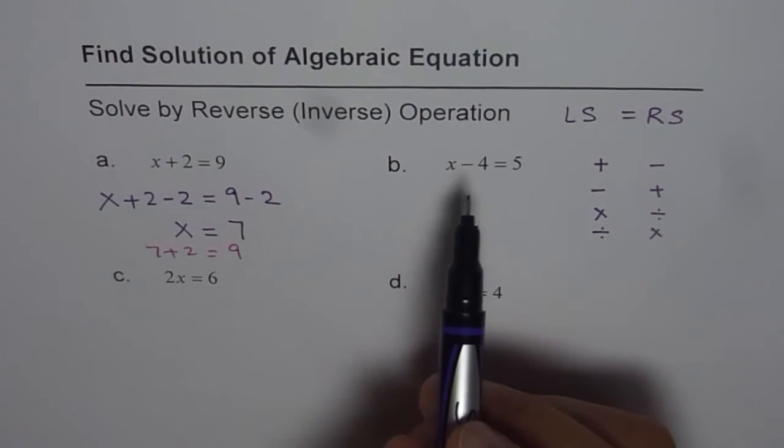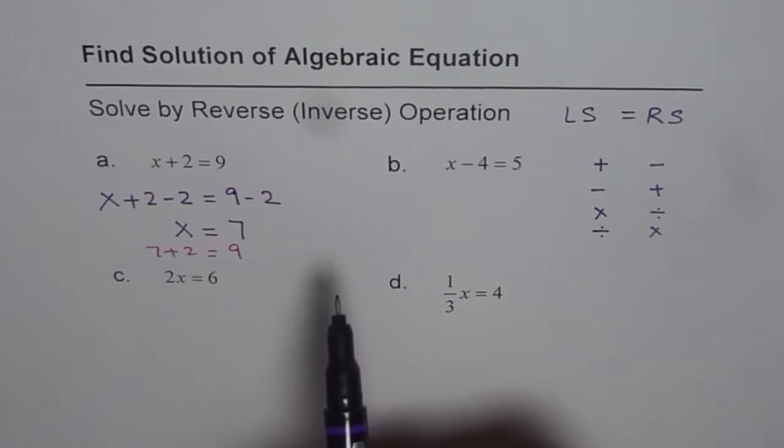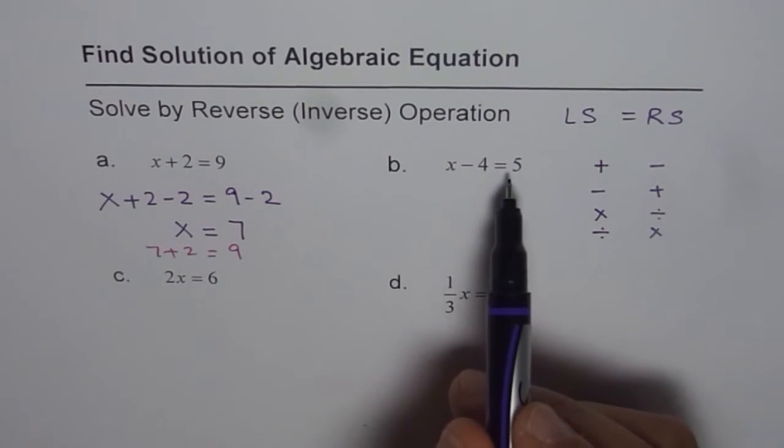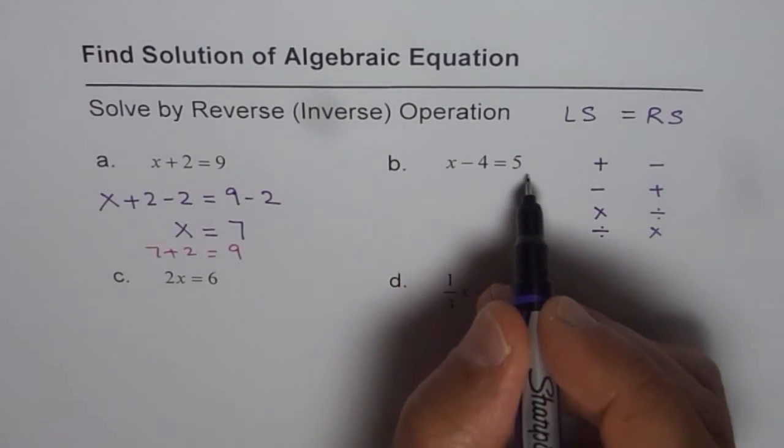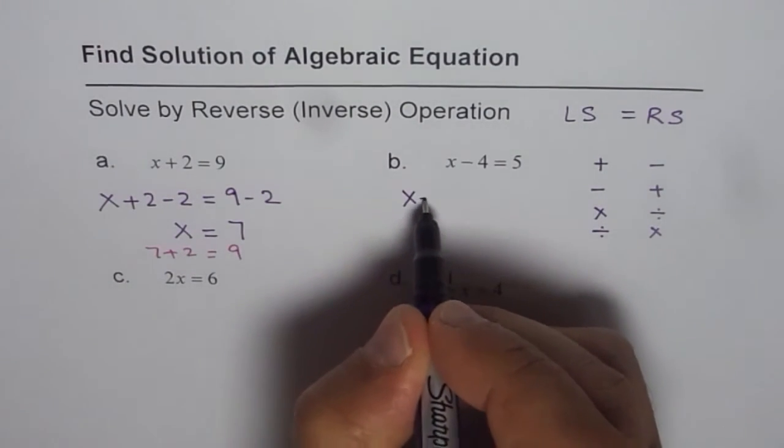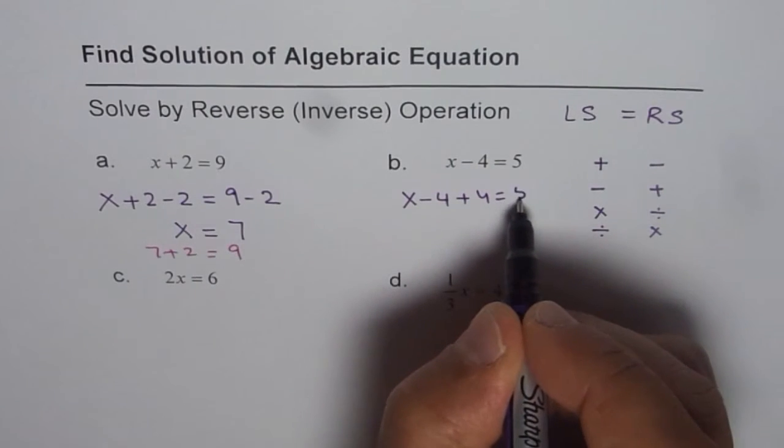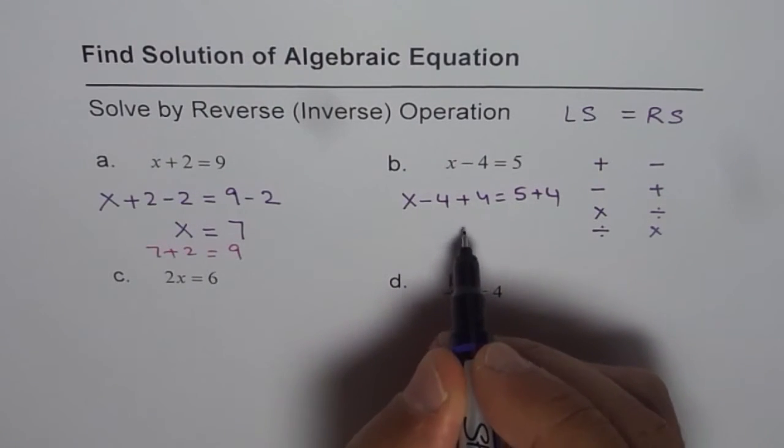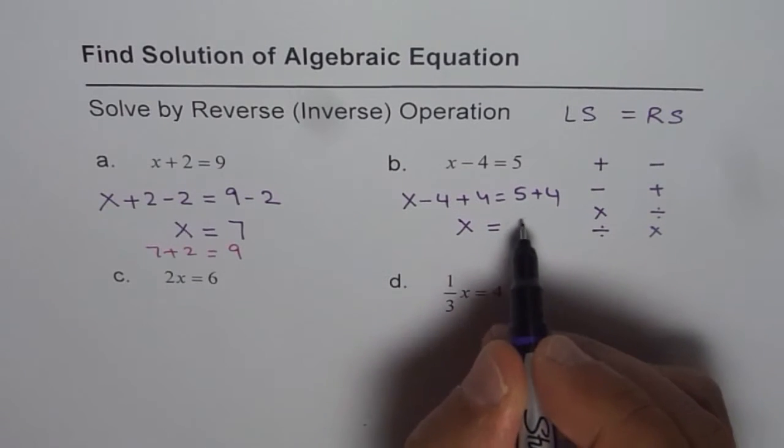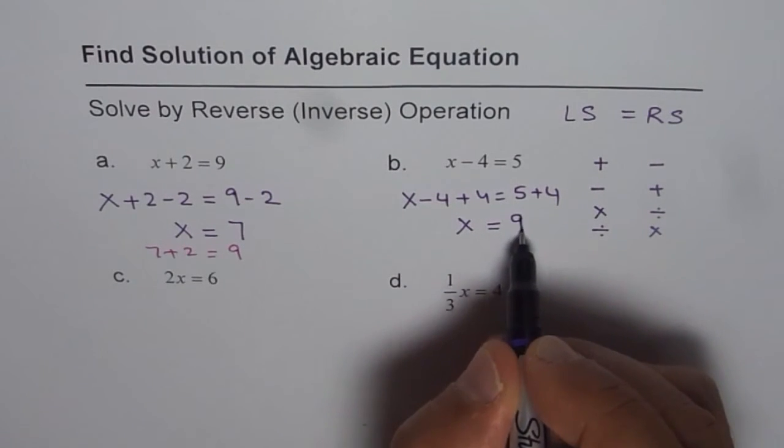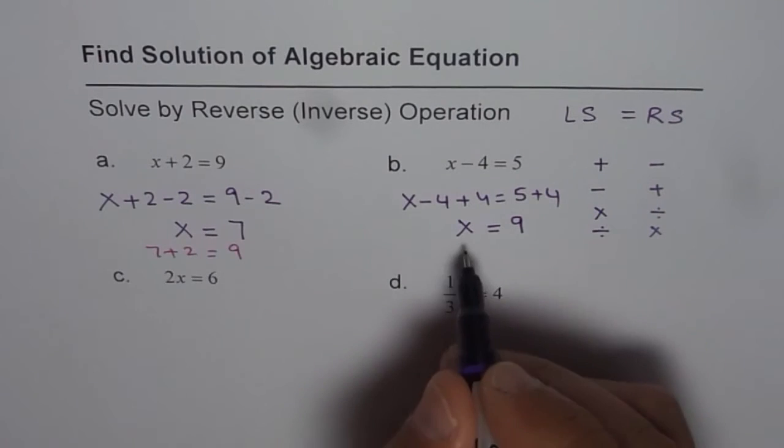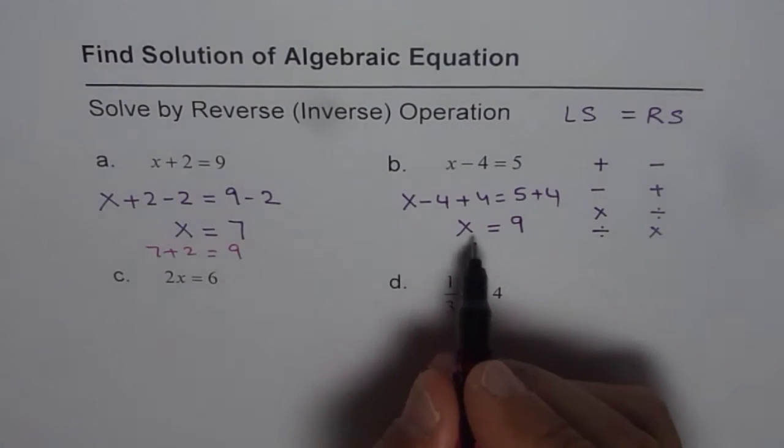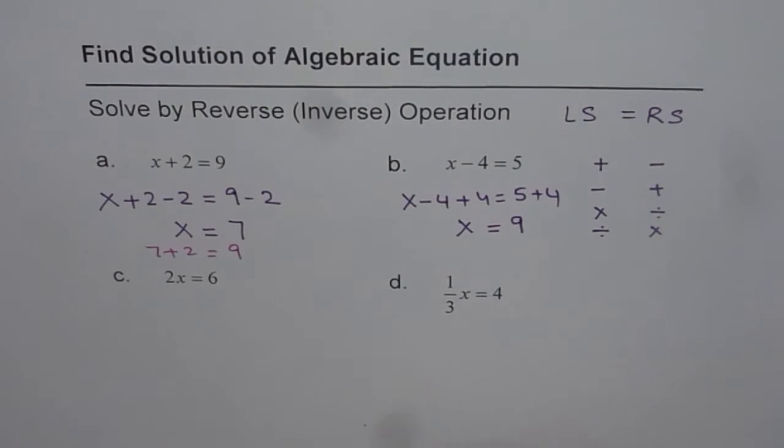Let's do one more. x minus 4 equals 5. What is reverse of minus 4? Plus 4. So let's add 4 to both sides. We have x minus 4 plus 4 equals 5 plus 4. Minus 4 plus 4 is 0, so we are left with x on the left side. And 5 plus 4 is 9 on the right side. x equals 9 is the solution.